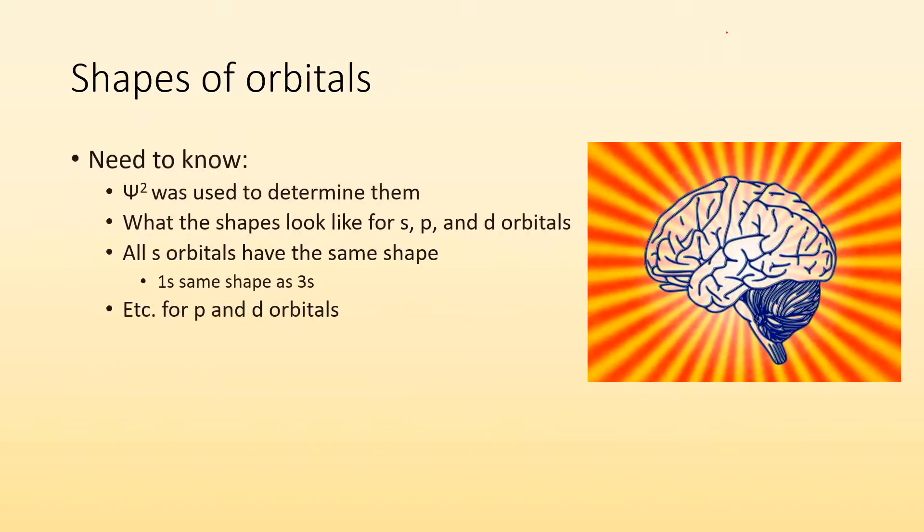So shapes of orbitals. What do you need to know? You need to know that psi squared was used to determine the shapes. You need to know what the shapes look like for S, P, and D orbitals. You also need to know that all S orbitals have the same shape, meaning that the S sublevel in the first energy level has the same shape as the S sublevel in the third energy level. And the same is true for the P and the D orbitals. What you don't need to know is how the math works.